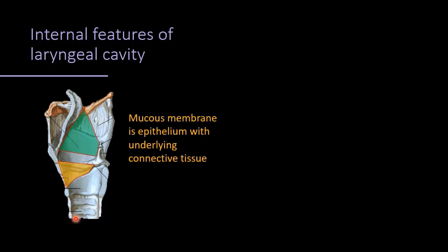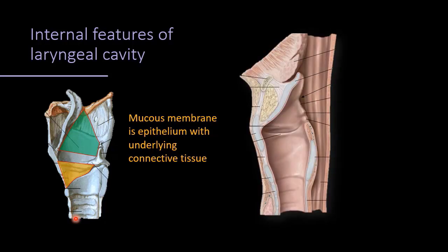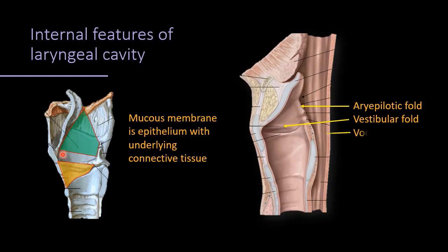All membranes and the interior of the larynx are covered by mucous membrane — epithelium with underlying connective tissue. The laryngeal epithelium is respiratory variety: pseudostratified ciliated columnar epithelium. When placed on the inner surface of the larynx, we see the aryepiglottic fold as the upper free border of the quadrate membrane, with corniculate and cuneiform cartilages on its posterior part. The vestibular fold is the lower free border of the quadrate membrane, and the vocal fold is formed by the upper free border of the conus elasticus. When ligaments are covered by mucous membrane, they are called folds.